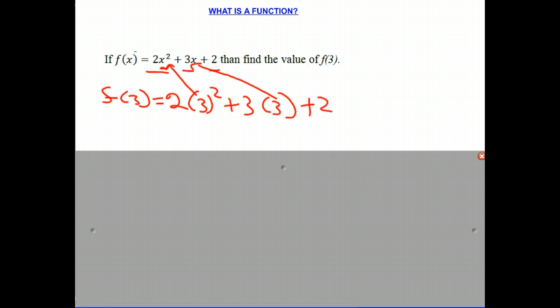3 squared is 9, so you get 2 times 9 plus 3 times 3 plus 2. 2 times 9 is 18 plus 3 times 3 is 9, plus 2, and we get 29. You're simply substituting 3 for the value of x and then using the rule finding the value of f of x or y.